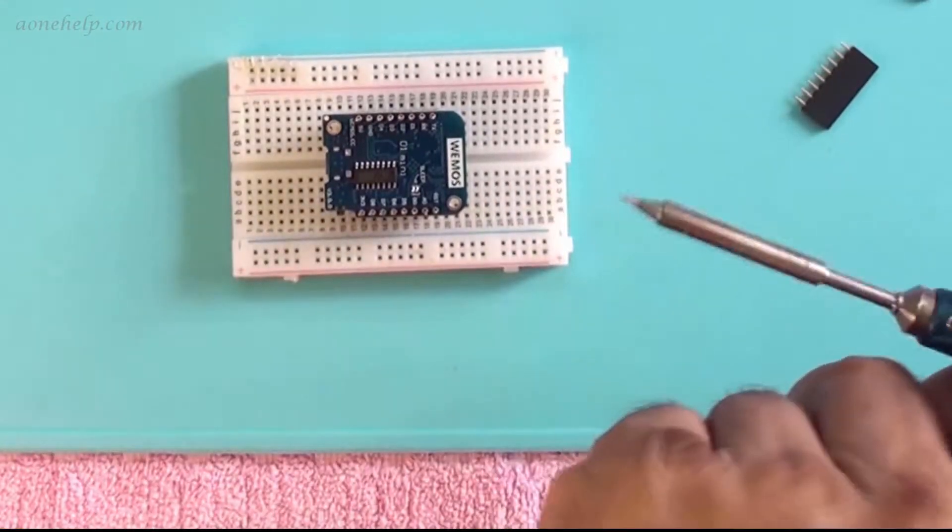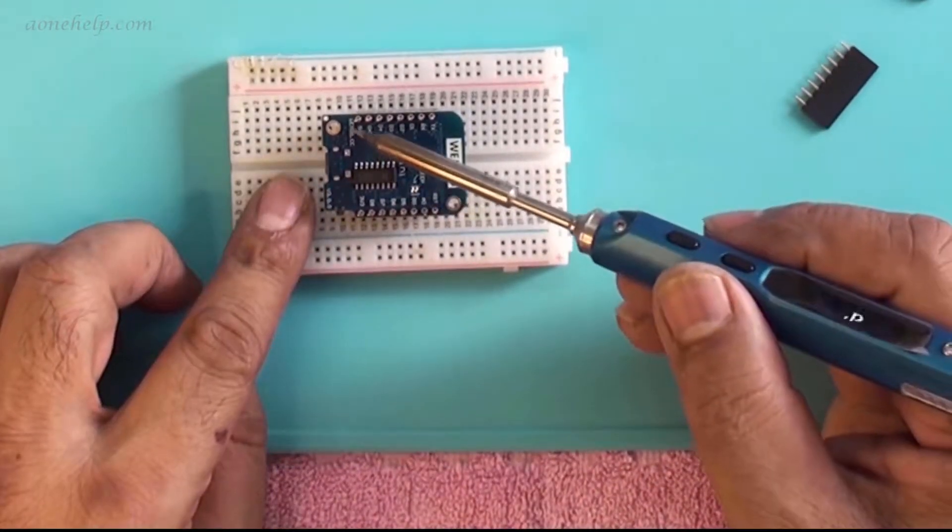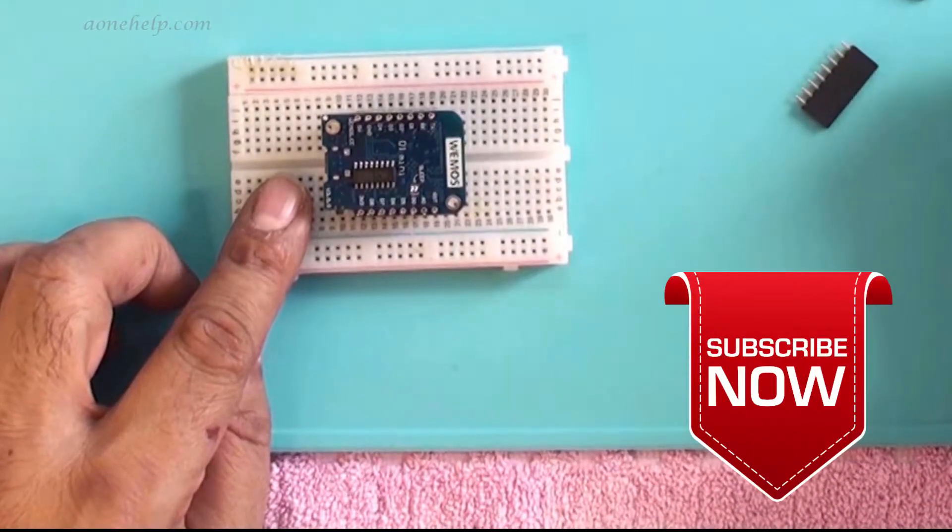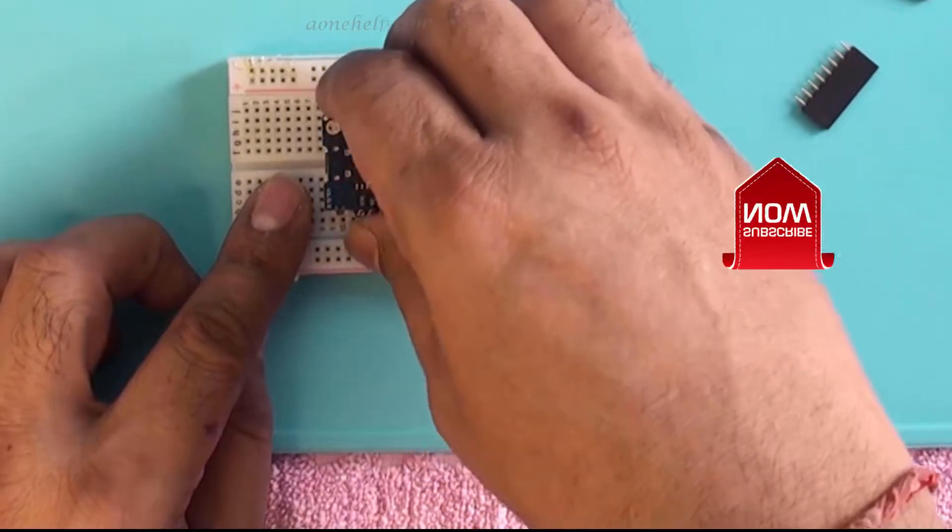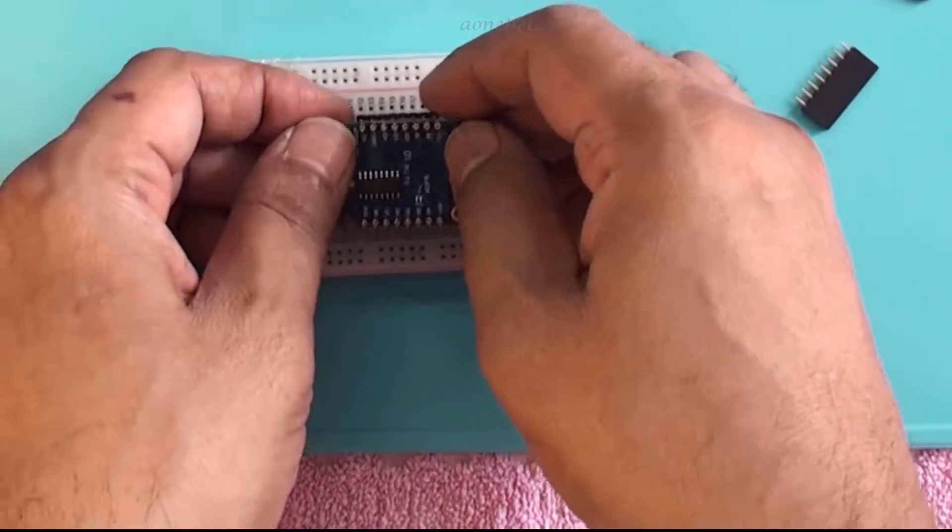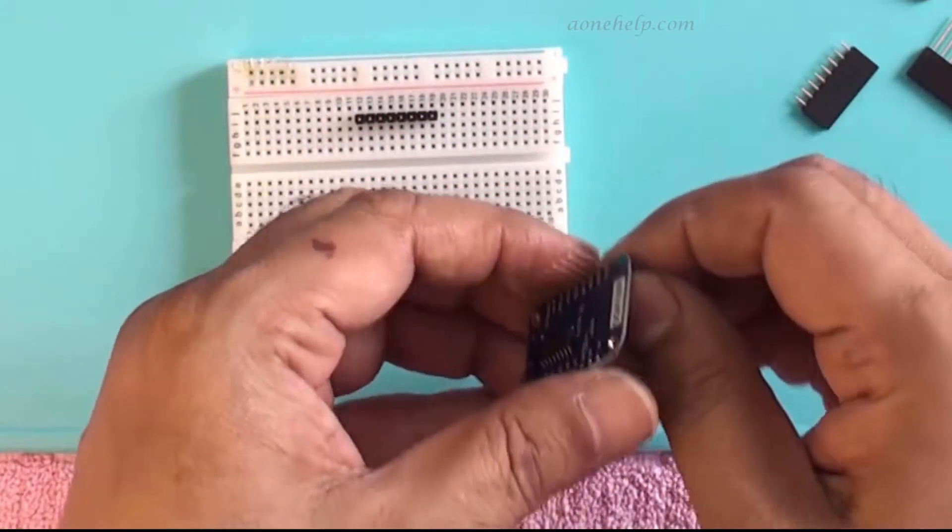Now we can solder the long pins with the module, obviously while gently pressing the module. Remember that during soldering long pins with the module, care should be taken so that no solder is soldered on the pins except at the junction of pins and module. Otherwise we will face problems in fixing the module on the breadboard or shields and we have to remove the extra solder on the pins.